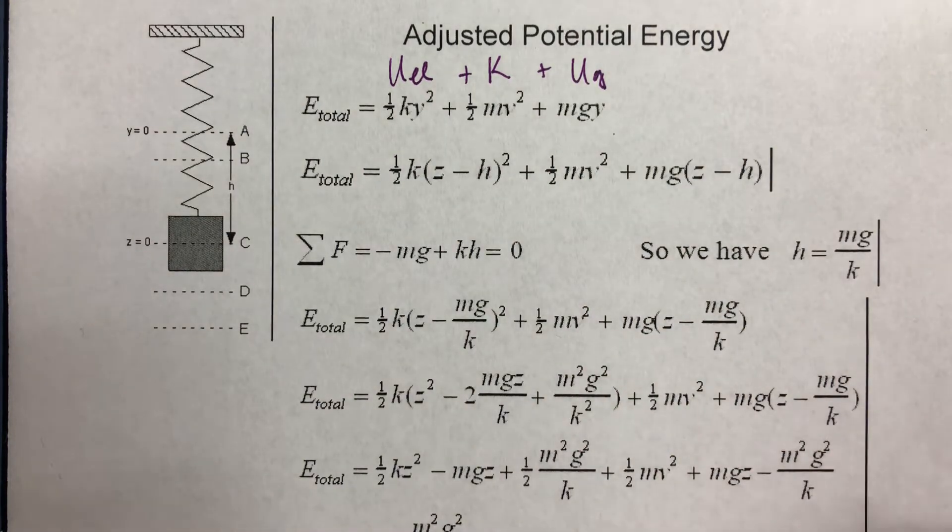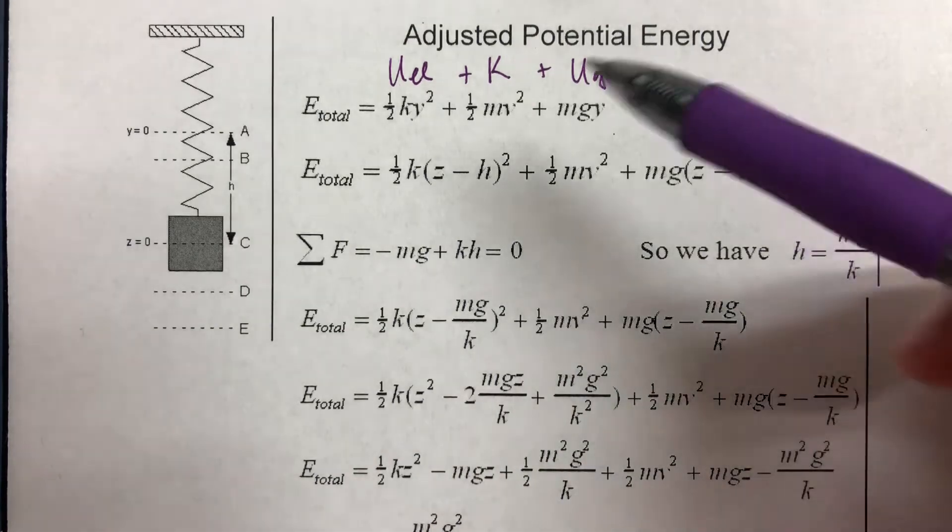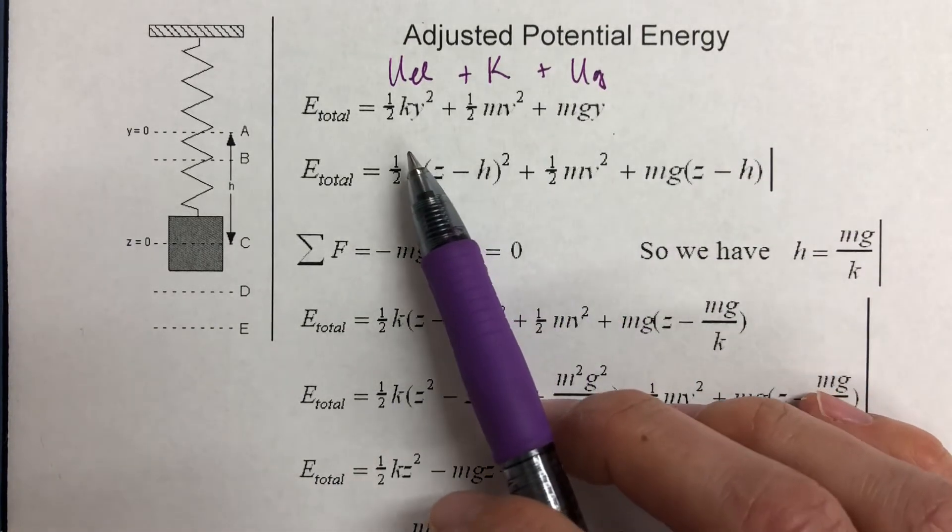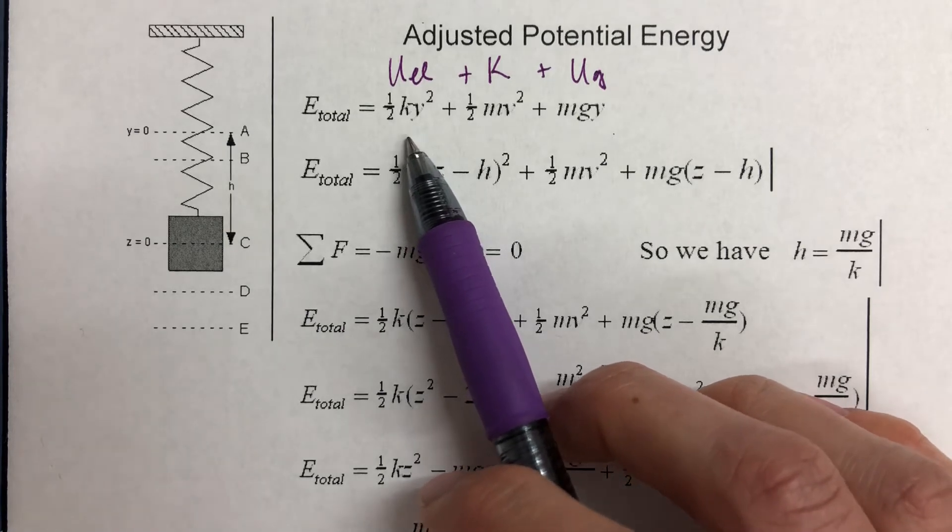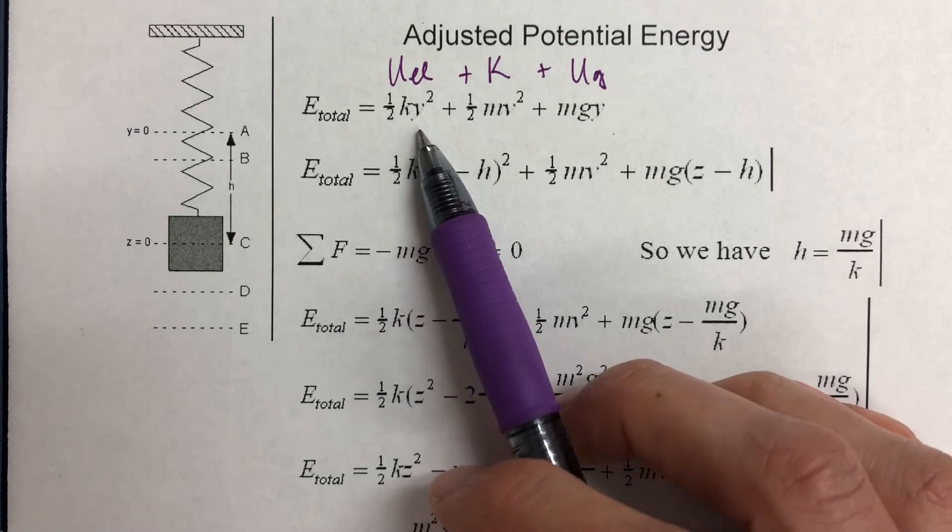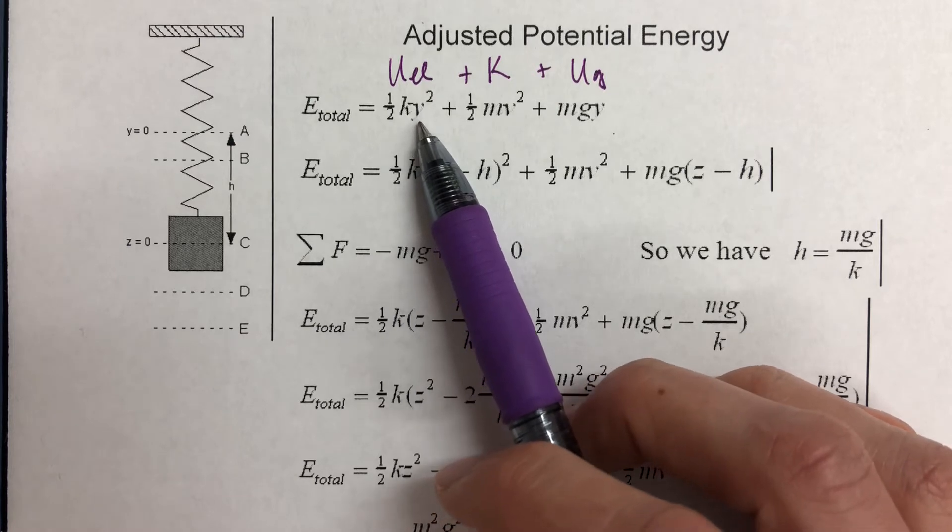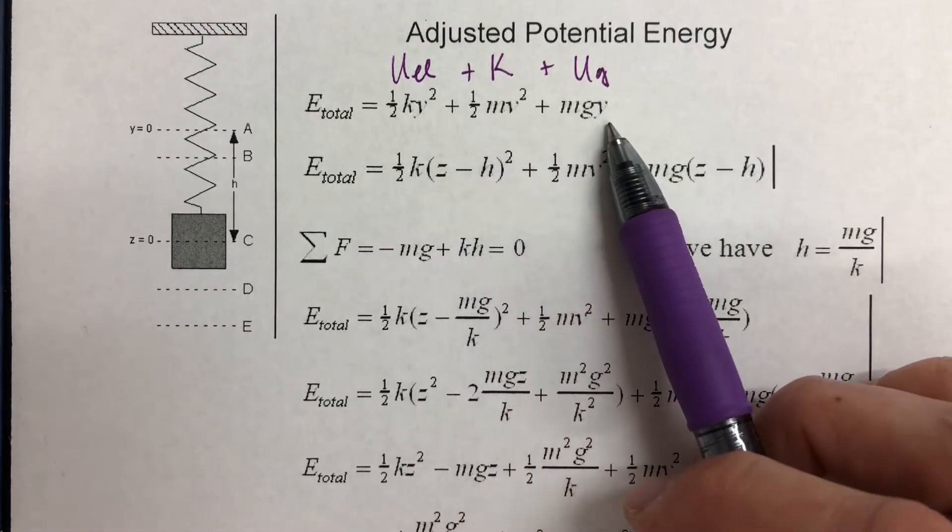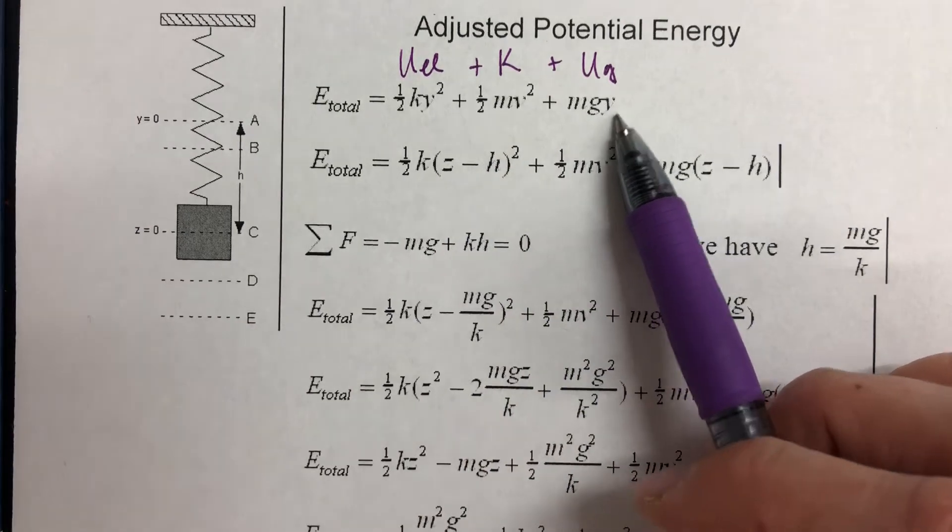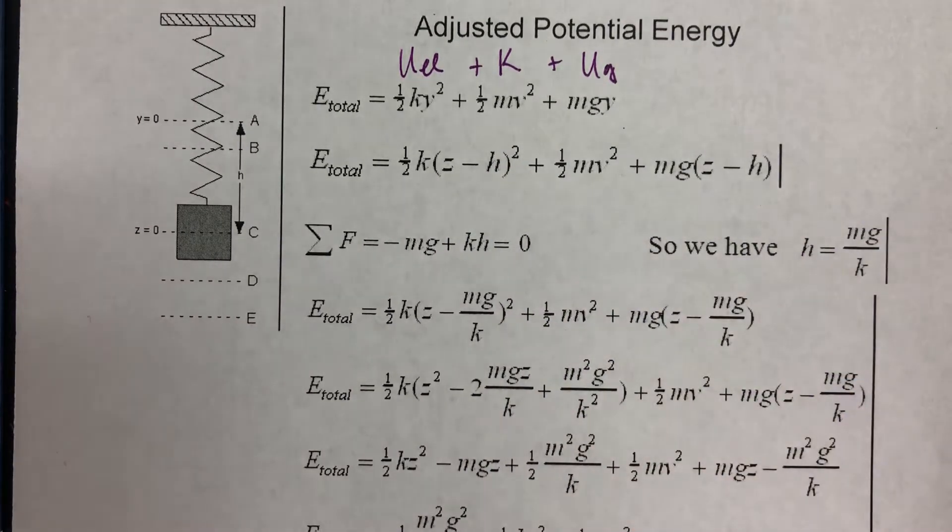Now I'm going to derive a simplification of the system for you, because it would be pretty challenging if you think about the data you just took to figure out the spring potential energy, to find the stretch of the spring from its initial position. Kinetic energy would be pretty easy, and then gravitational potential energy wouldn't be so hard. But you would have to combine all three of those.